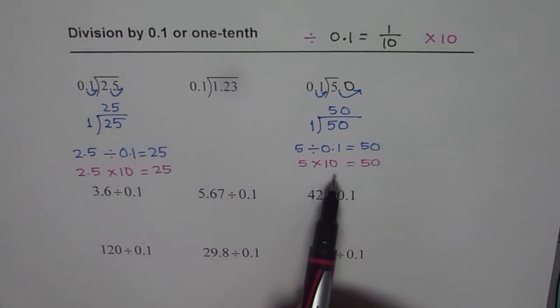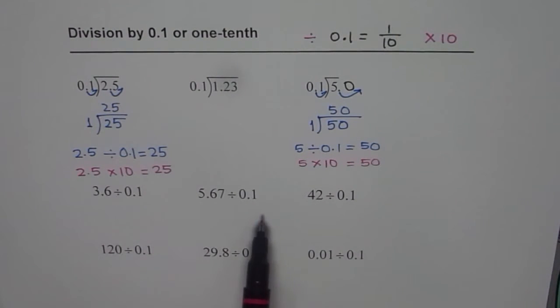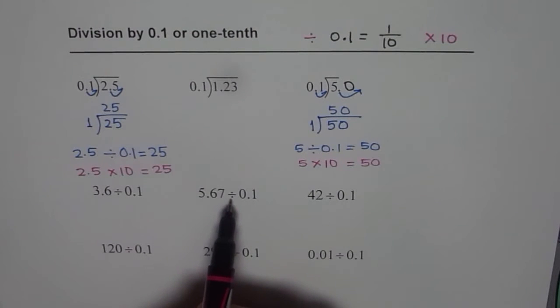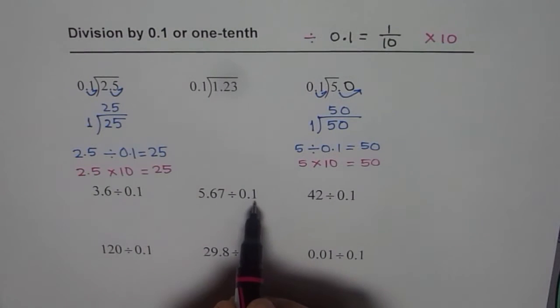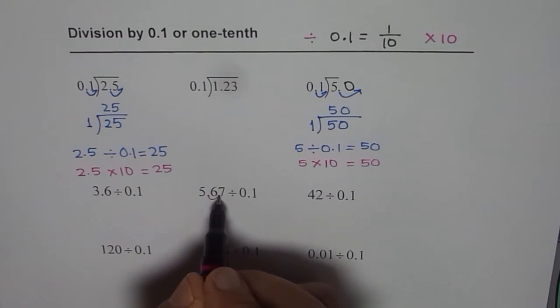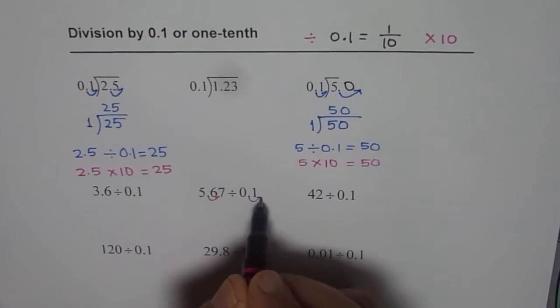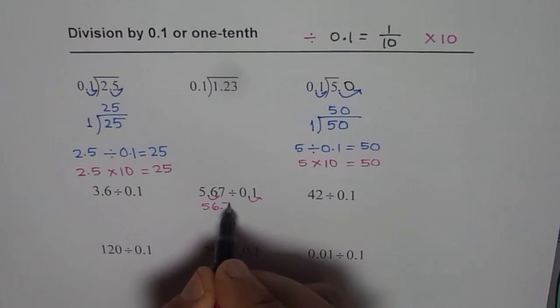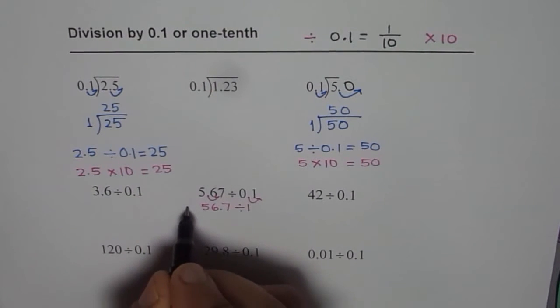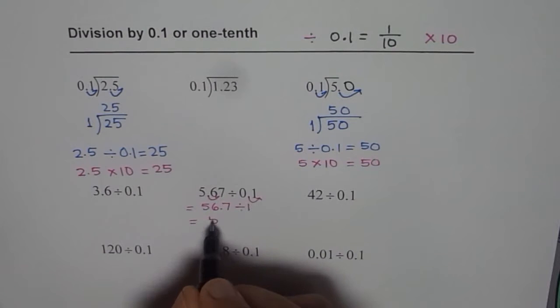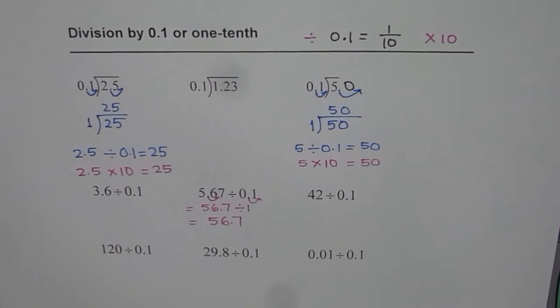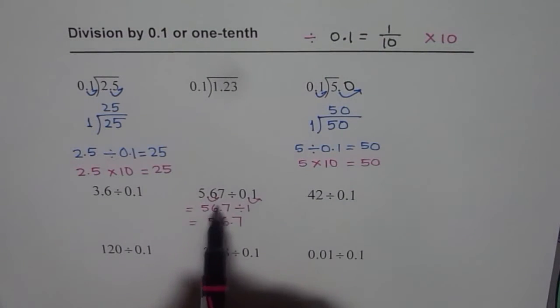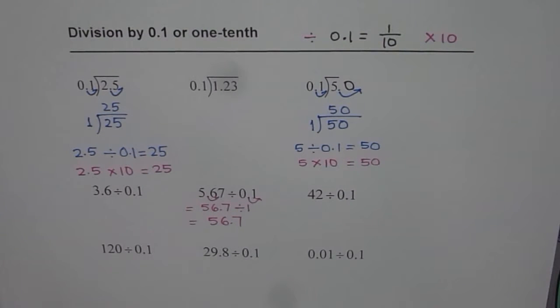Now let us apply this and do some of these. So let me try 5.67 divided by 0.1. So when we divide, what should we do? We have to move this decimal one unit to the right. So now I have 56.7. I can write this as 56.7 divided by 1. Well that equals 56.7 itself. It is same as 5.67 times 10. So always you get times 10 when you divide by one-tenth.